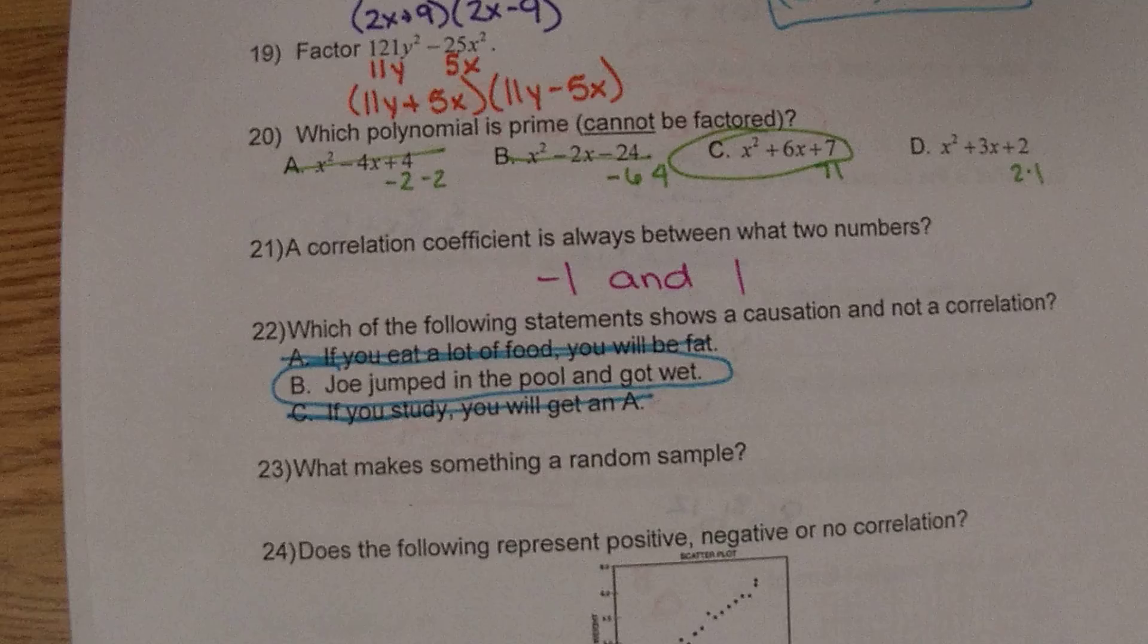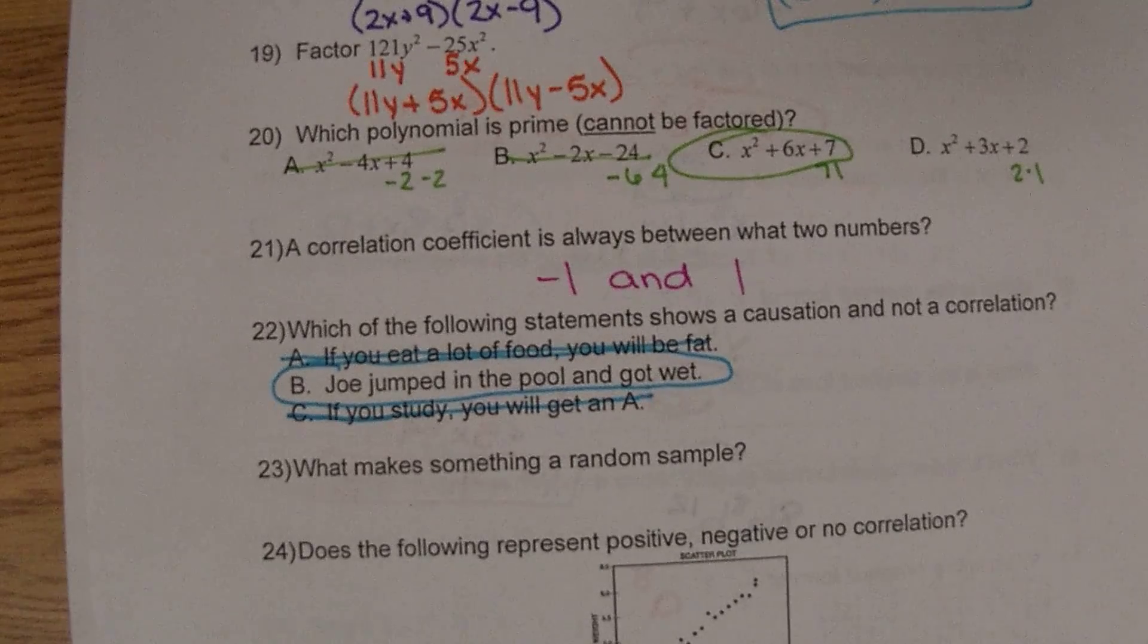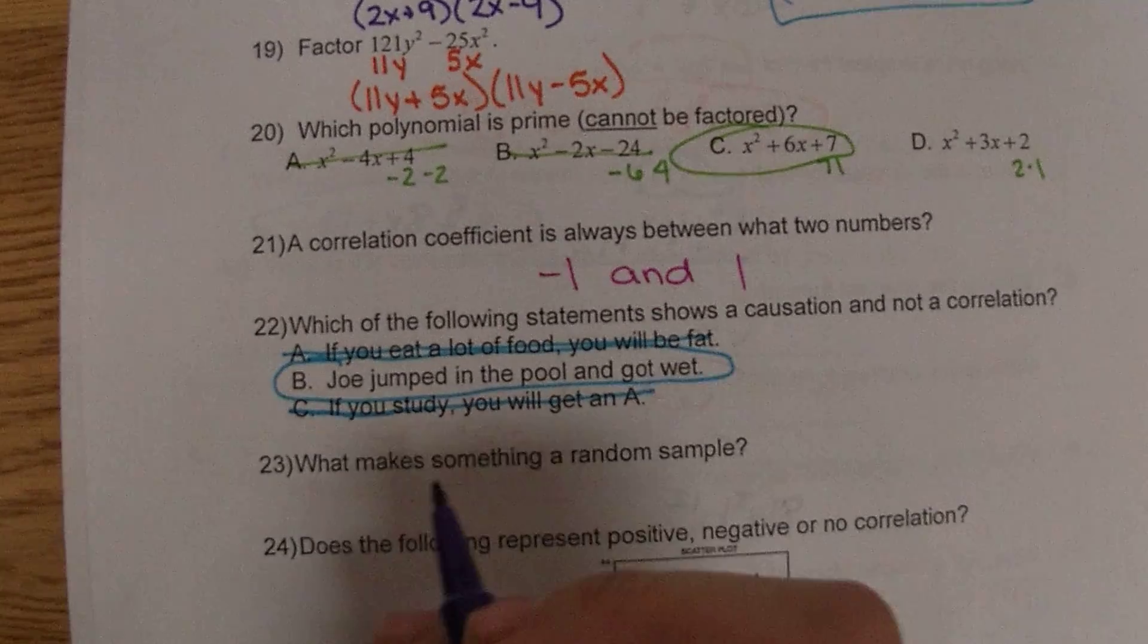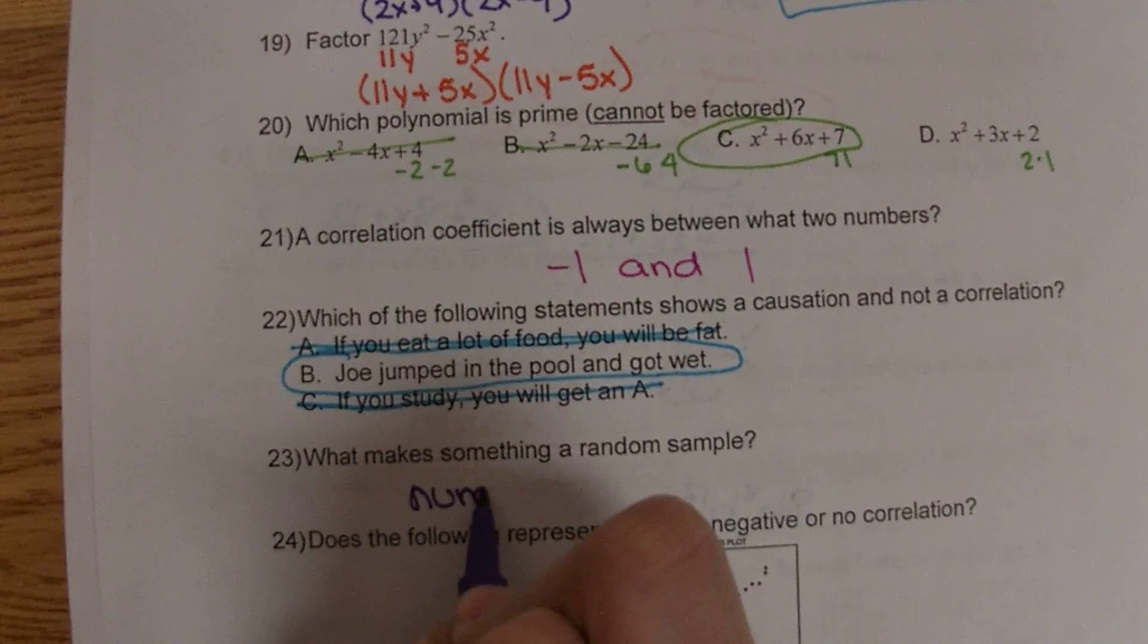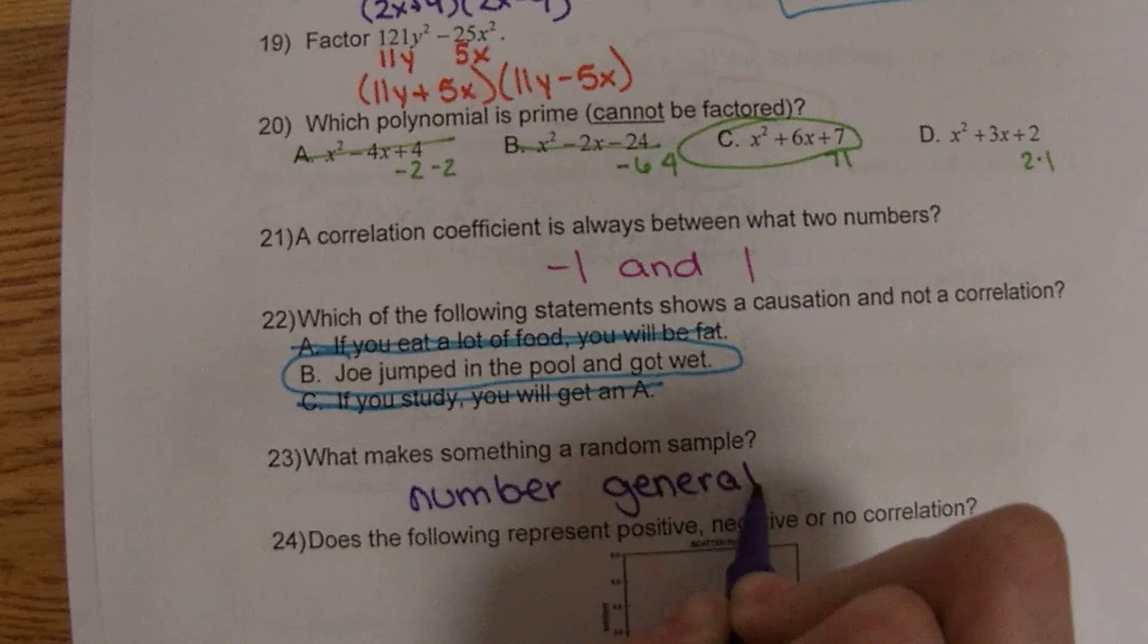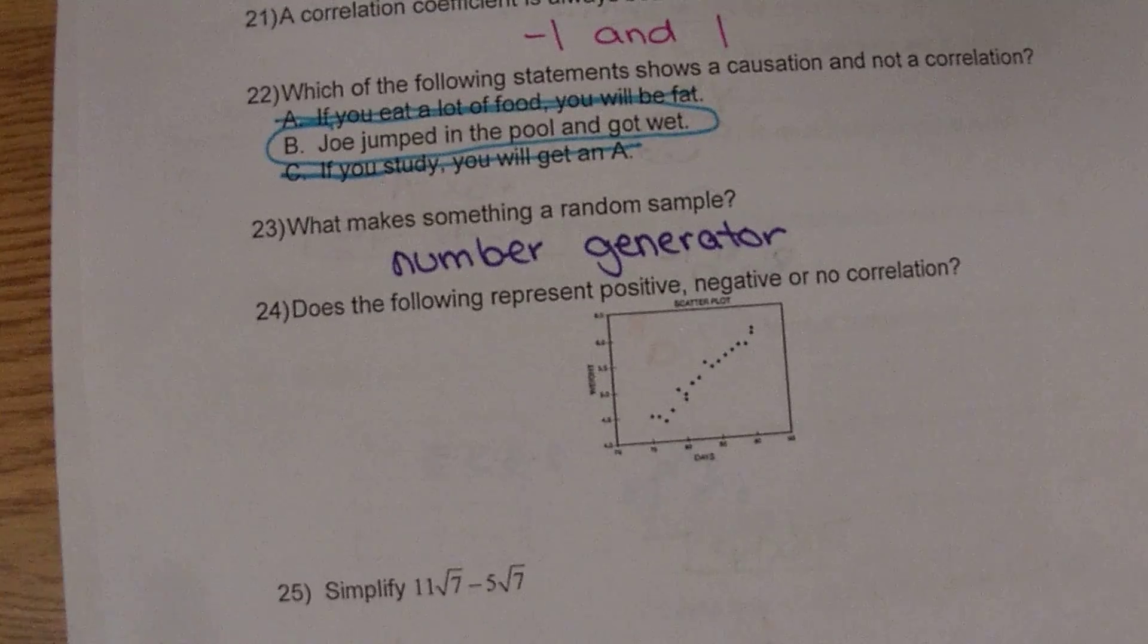23, what makes something a random sample? Random is any time that everyone has a fair chance of getting picked. This is going to be like a number generator, drawing names from a hat. That's our random sample.